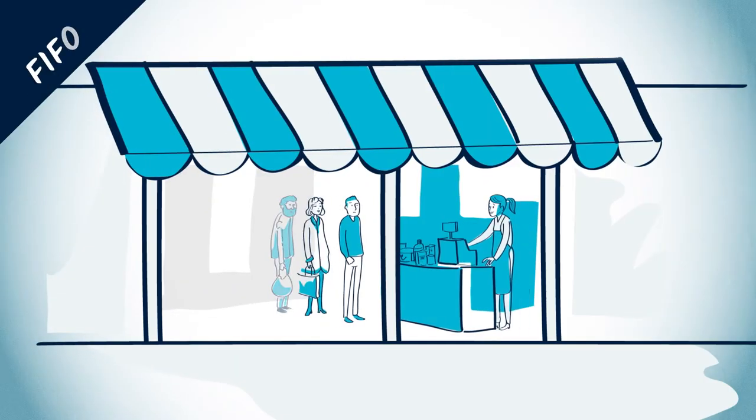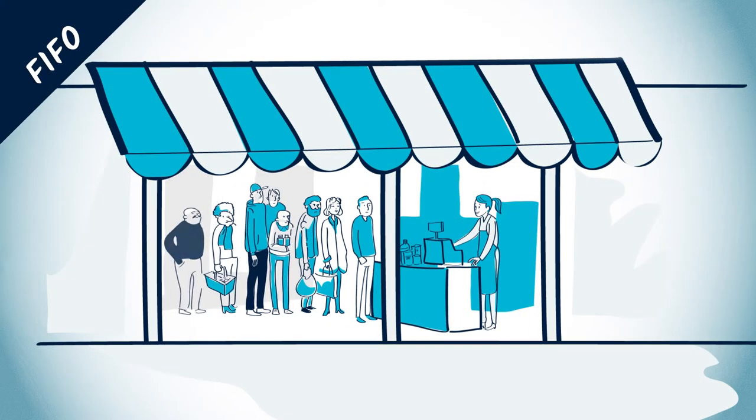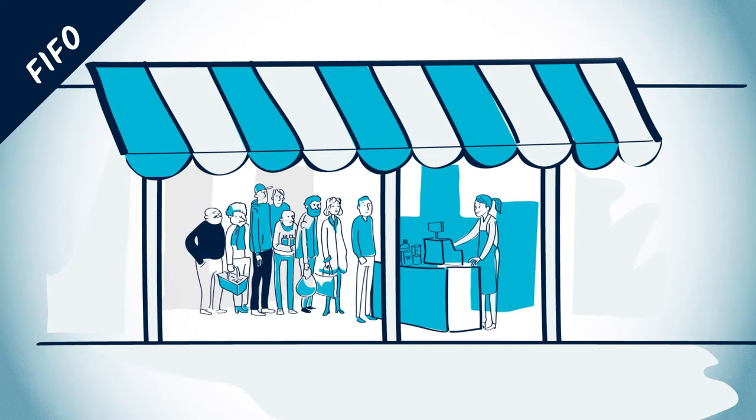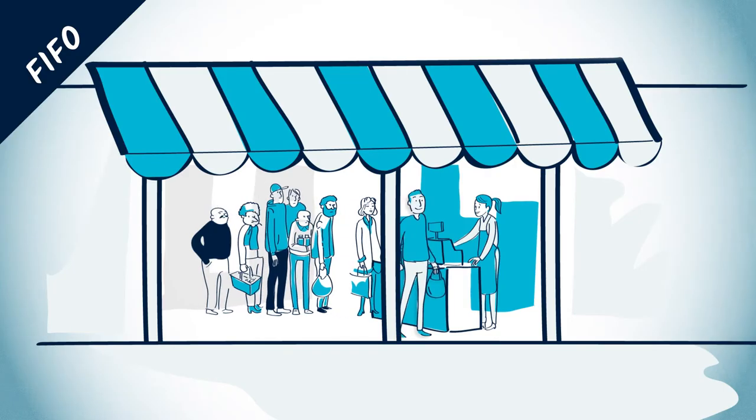On the contrary, a queue, which is known as first-in-first-out, or FIFO for short, is a memory structure for which the first element added will be the first one to be removed. Imagine it as a queue in a shop — customers are served on a first-come, first-served basis.